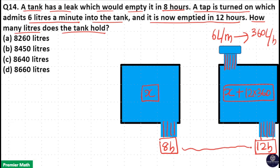Here, time difference between 12 and 8 is 4 hours and the difference between the amount of water emptying is, the x's cancel, 12 times 360 liter.